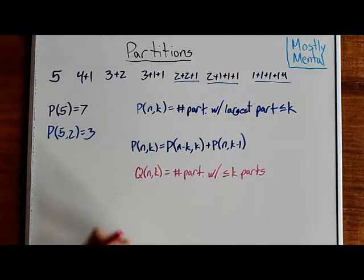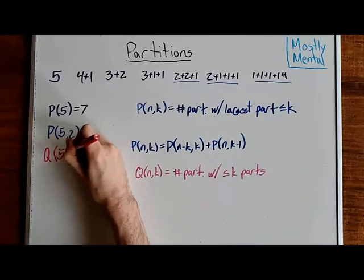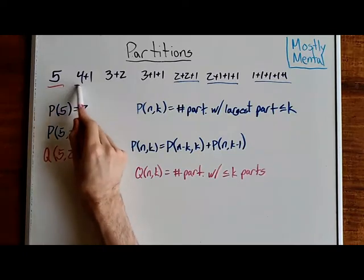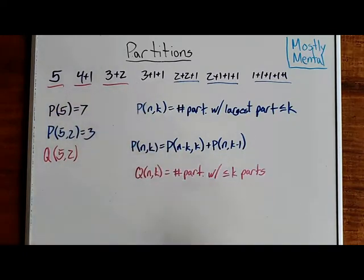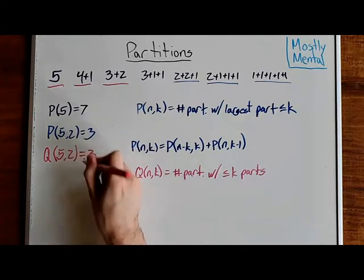So, for example, q of five, two, is going to include this one, this one, and this one, since those are the ones with one or two parts. And so, again, q of five, two is three.